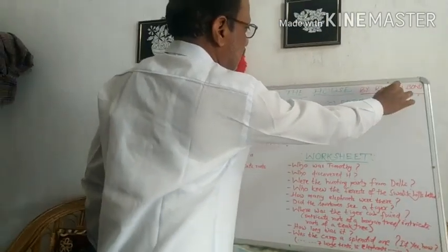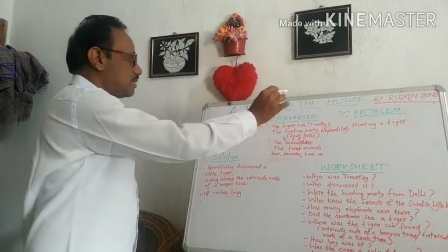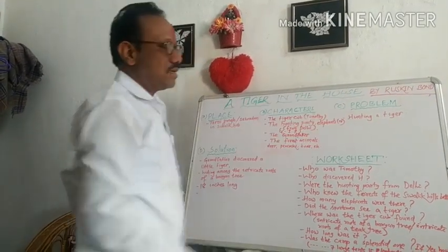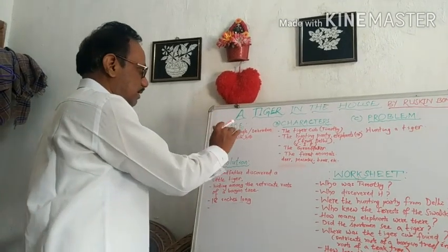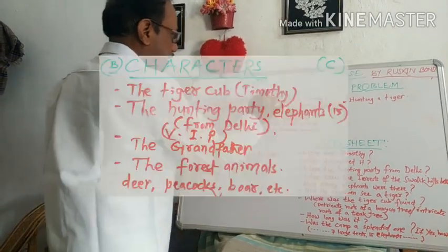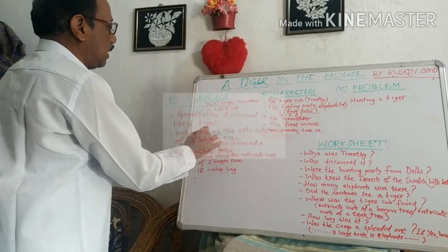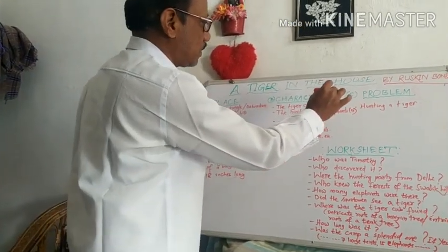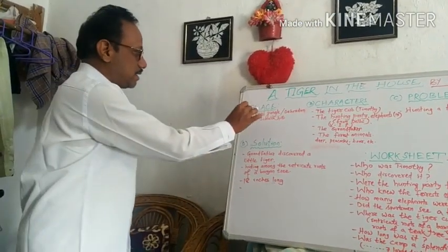Ruskin Bond is an Indian author and the writer of this story. The name of the story is 'A Tiger in the House'. All stories can be divided into four parts: place, characters, problem, and solution. In this story also, it is divided into four parts. The first part is the place.